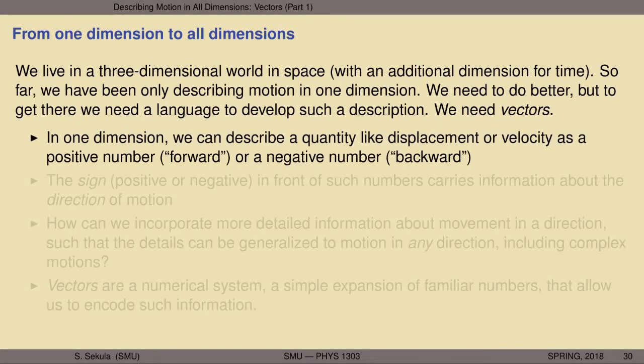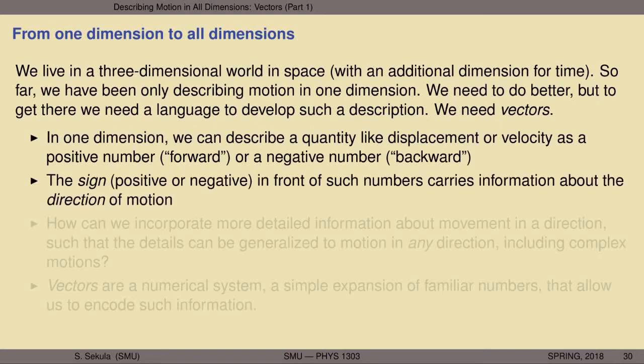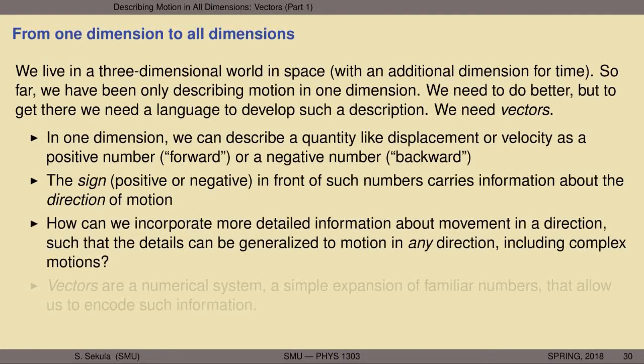In one dimension, we can describe a quantity like displacement or velocity as a positive number, which indicates motion in the forward direction along that coordinate axis, or a negative number, which indicates backward motion along that same axis. It's the mathematical sign, whether positive or negative, that carries the information about the direction of motion. So we've already learned something about how to indicate the magnitude or length of a movement, and the direction of that movement.